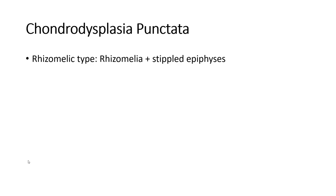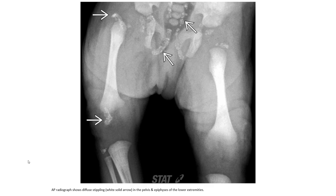Chondrodysplasia punctata shows rhizomelic shortening with steep femoral epiphyses and diffuse stippling in the cartilaginous cavities and epiphyses of the lower extremity.